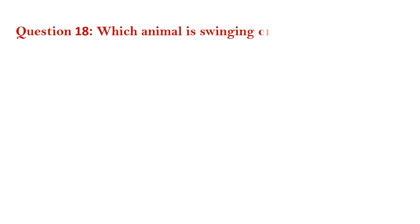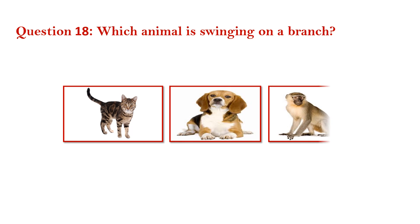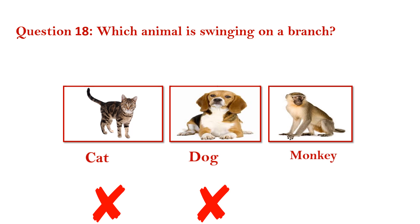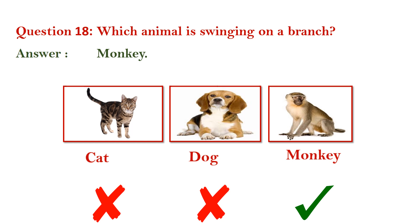Question number 18. Which animal is swinging on a branch? Cat — wrong. Dog — wrong. Monkey — right. Answer is monkey.